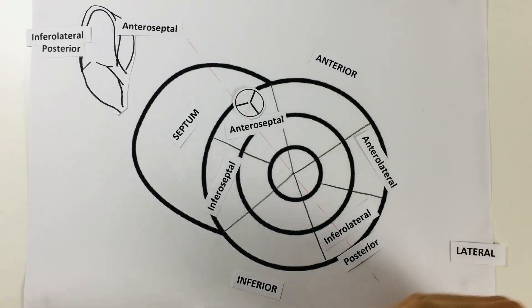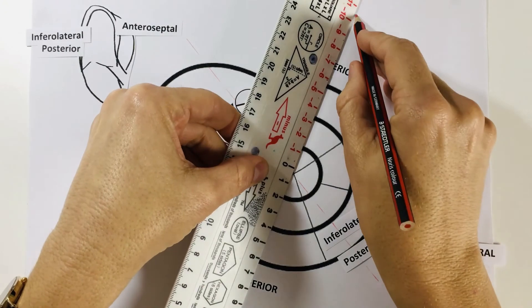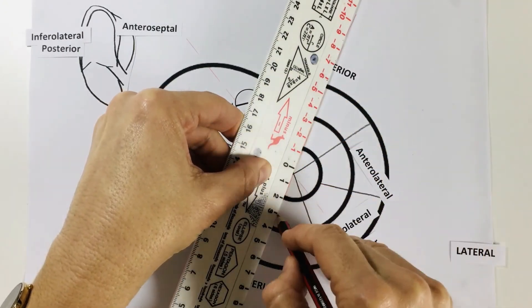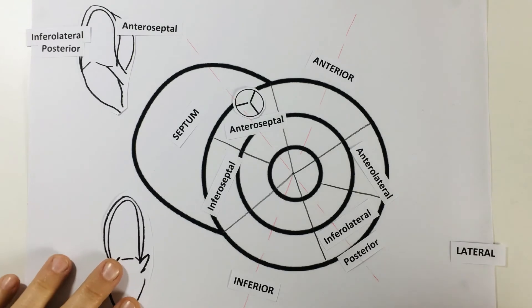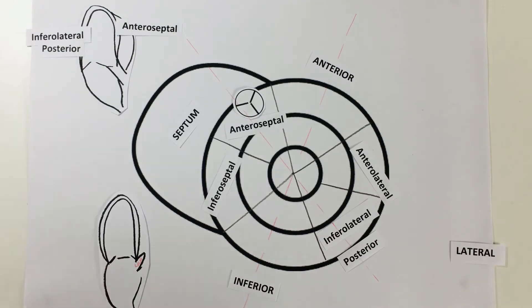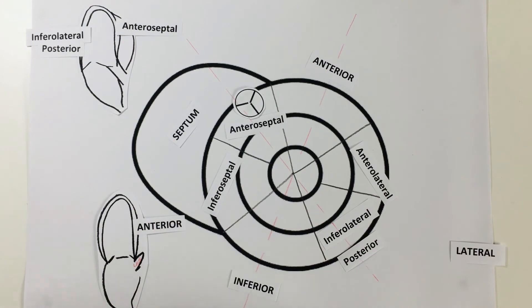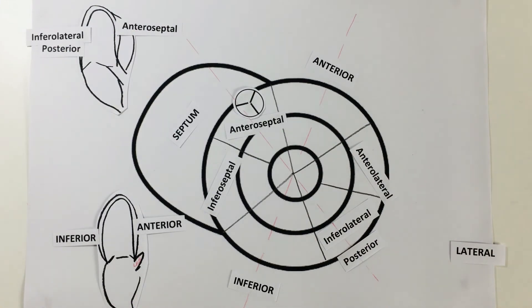Now let's look at the two-chamber view. The two-chamber view doesn't go through any of the right ventricle, so we go through the anterior and the inferior wall segments. To identify which is which: the left atrial appendage is at the front of the heart, so the wall near the appendage is the anterior wall, and the opposite wall is the inferior wall.